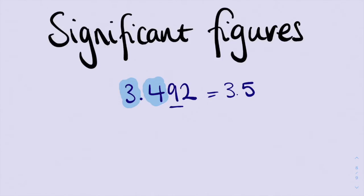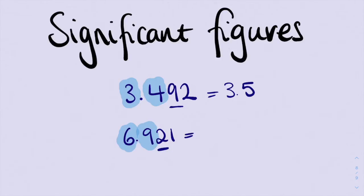But if I have the number 6.921, and again I want to take it to two significant figures, so I've got one significant figure, two significant figures. Now we look at our critical digit — it's the number 2. We know that 2 is less than 4, so our significant figures aren't going to change. We're going to stay at 6.9.